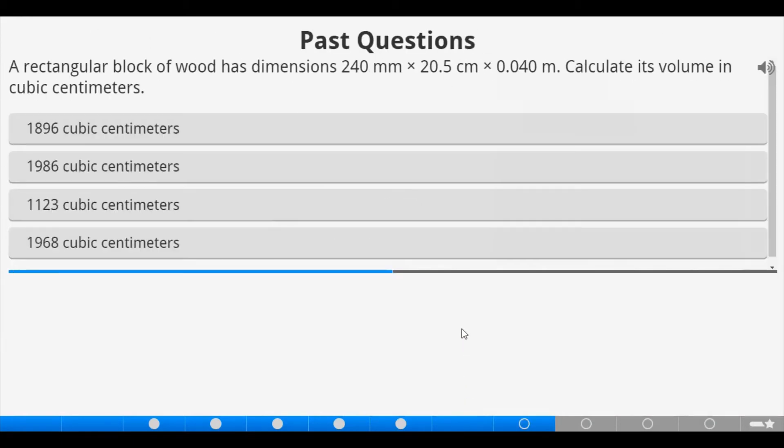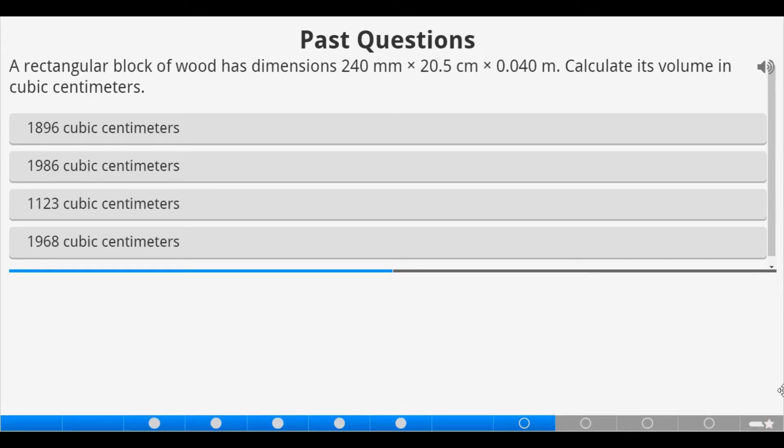Let's deal with some past questions. A rectangular block of wood has dimensions 240 millimeters multiplied by 20.5 centimeters times 0.04 meters. Calculate its volume in cubic centimeters. Let's go through the process before we pick the answers.